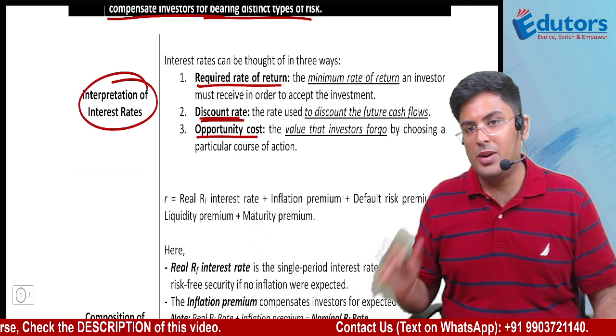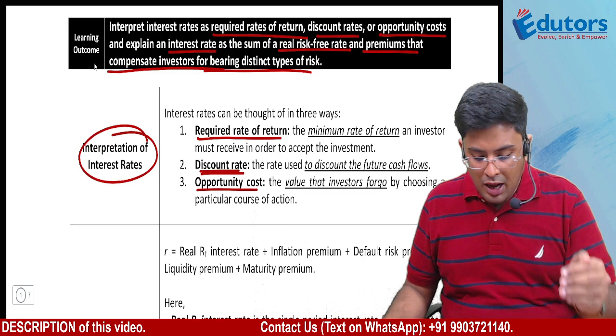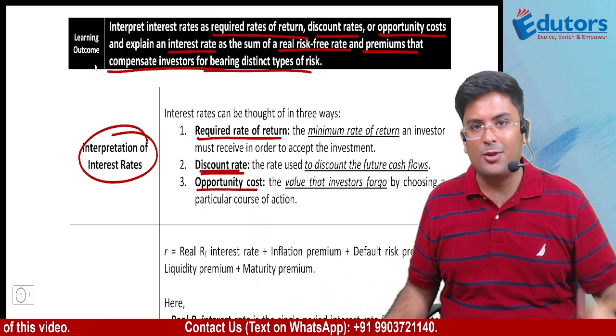So to summarize, interest rate can be referred to in three different ways. Your requirement with respect to any investment is a required rate of return. When you discount future cash flows, that rate is called discount rate. And if you are forgoing an opportunity somewhere, that rate becomes opportunity cost. Next, we need to understand how interest rate is a sum of real risk-free rate plus certain premiums.